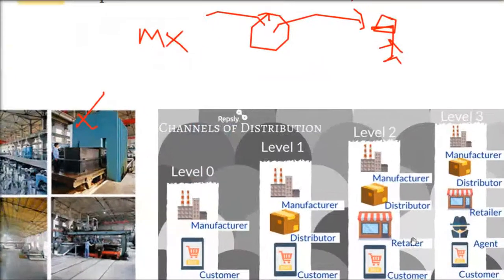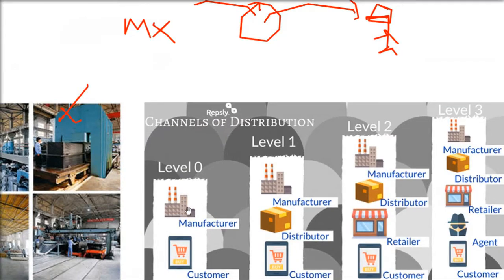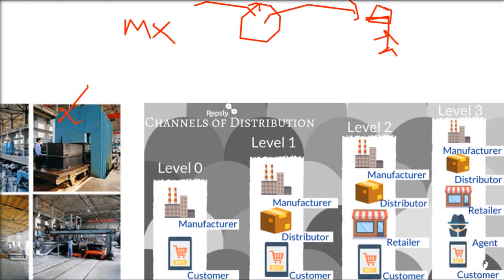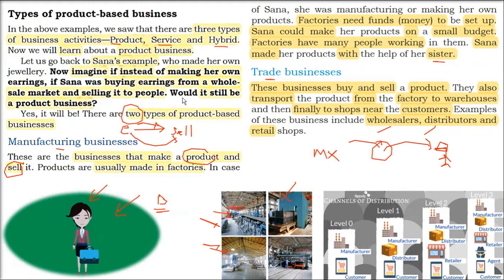There are four levels of distribution channels. Level 0: manufacturer gives directly to customers — for example, Reliance Trends or Big Bazaar making and selling in their own stores. Level 1: manufacturer gives to distributor, who gives to the customer. Level 2: manufacturer gives to distributor, distributor gives to retailer (local market), and the customer buys from the local market. Level 3: manufacturer gives to distributor, distributor to retailer, and the retailer sends an agent to the customer to sell it.